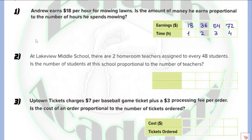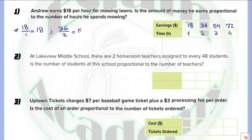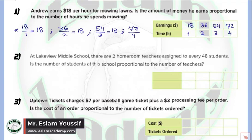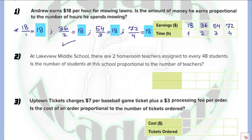Now we need to find if this relation is proportional or not. When we have a relation with dollars and number of items, we divide the dollars by the number of items. The first rate is 18 over 1, which equals 18. The second is 36 over 2, which simplifies to 18. The third is 54 over 3, which equals 18. And 72 over 4 also equals 18. Since all rates equal $18 per hour, this relation is proportional.